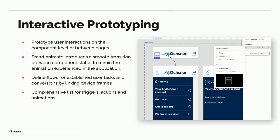Interactive prototyping: looking at flat design files isn't really enough. We need to add some prototyping so both the client and the developer understand how the end user will interact with something. Smart Animate is a tool in Figma that introduces smooth transitions between components to mimic the animated experience on the built-out app. It allows us to define flows a user would take for a conversion, like making a purchase or finding care information, and provides a comprehensive list of triggers — click, hover — all easy to use in the prototyping tool.